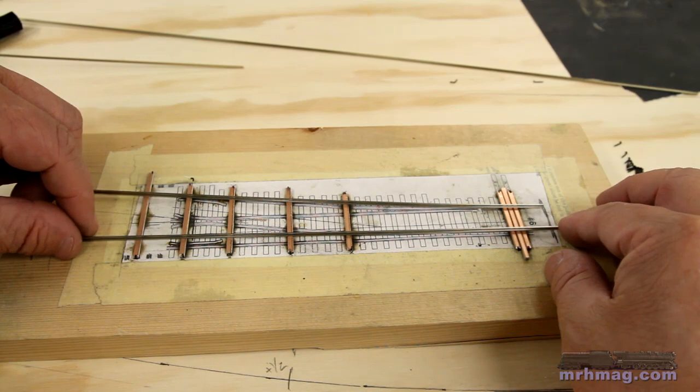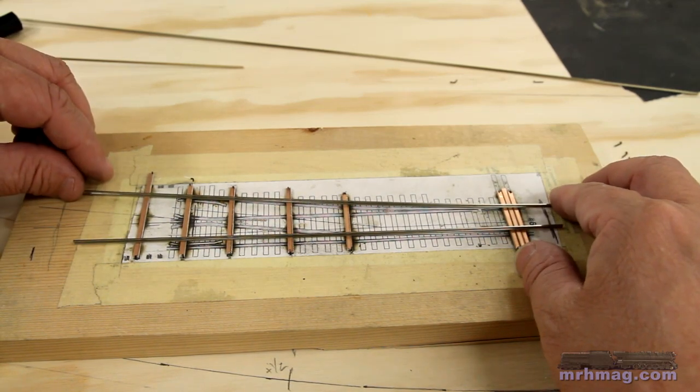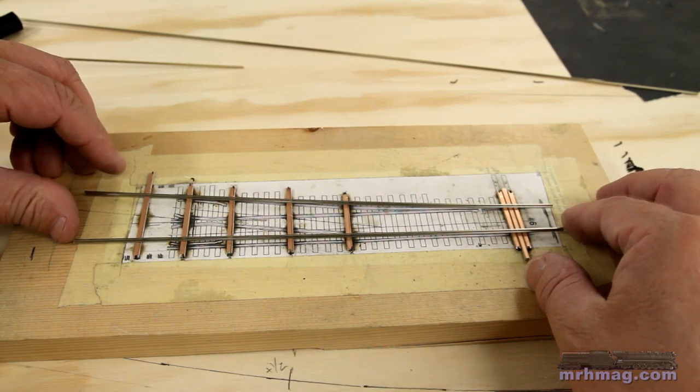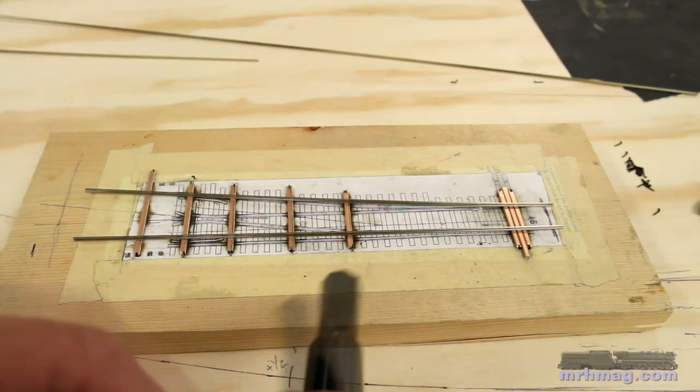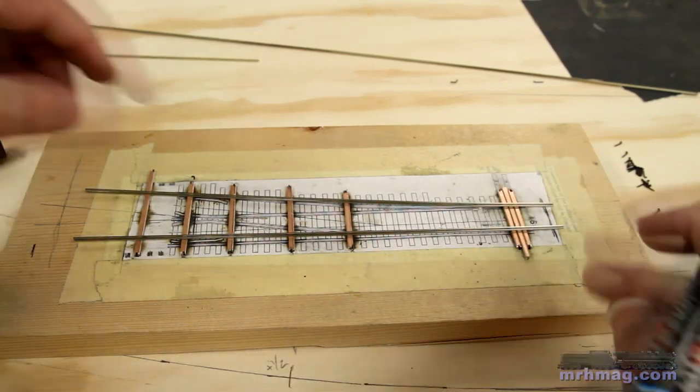Mark the inside surfaces of the stock rails where the points will nestle up to them. The rail base will need to be ground away here to give clearance. I use a black felt tip marker.